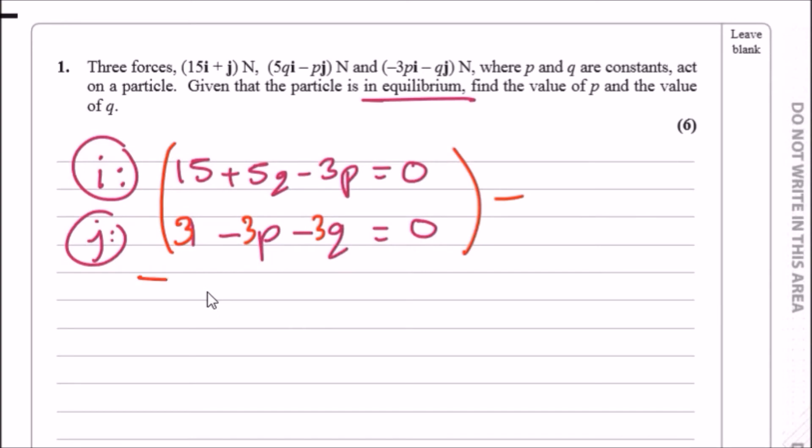So we have 12 + 8q = 0. Now just solving this one, subtracting 12 and dividing by 8 would be -12/8. This should simply reduce to, you could always use a calculator, we should get simply -1.5.